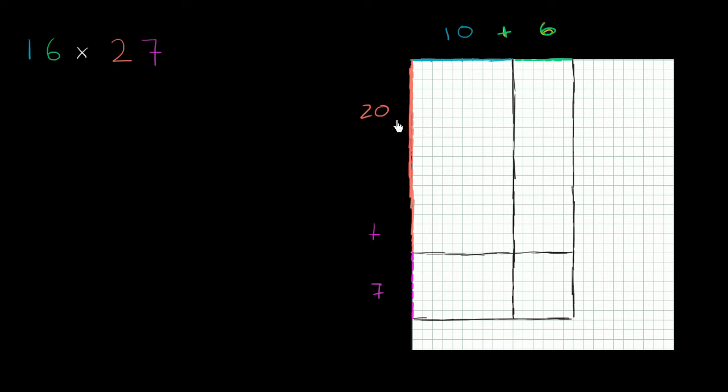So we could first think about, well, let's think about what 20 times 10 is. Well, 20 times 10 is a fairly straightforward thing. It's going to be 200. You can already think of it as 2 times 1, and you have two zeros there. So 20 times 10 is 200.